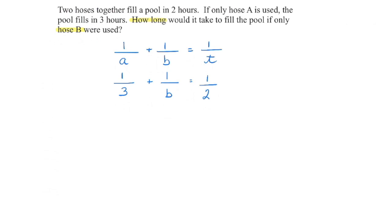When I see a working together problem, I start with how long it takes to complete the total job working together. Two hoses together fill the pool in two hours, so in one hour they fill half the pool. Hose A alone fills the pool in three hours, so in one hour hose A fills one-third of the pool. I'm looking to find how long it will take if only hose B is used. So my variable is the time for hose B, and now I've got my equation to solve.